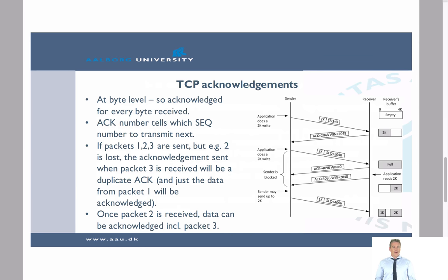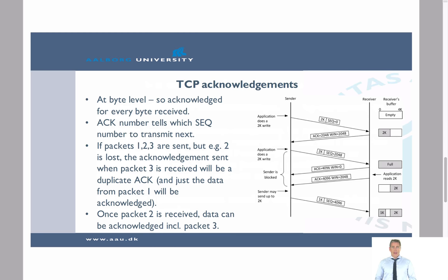The receiver is now receiving bytes numbered zero to 2047. It then sends an acknowledgment number of 2048, meaning it is ready to receive byte number 2048. When we do the next write, we again send two kilobytes of data, but this time the sequence number is 2048 because that is the number of the first byte we are sending. We were previously sending bytes zero to 2047; now we send byte 2048 onwards, and as expected we receive an acknowledgment number of 4096.